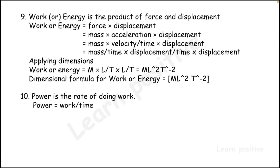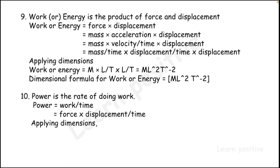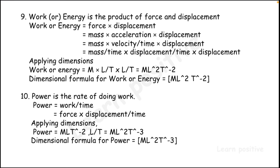Power is the rate of doing work, so power equals work divided by time. Work is force × displacement. Using mass × acceleration for force and substituting, we get M·L²·T⁻² × L divided by T, giving the dimensional formula of power as M·L²·T⁻³.